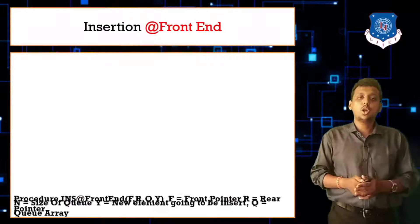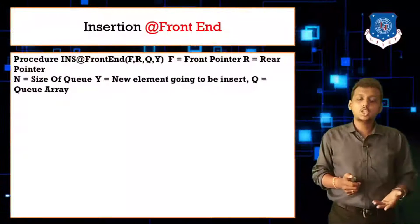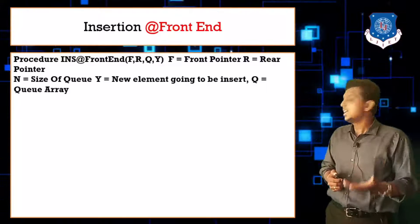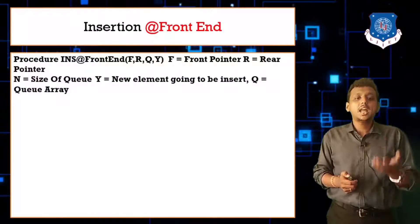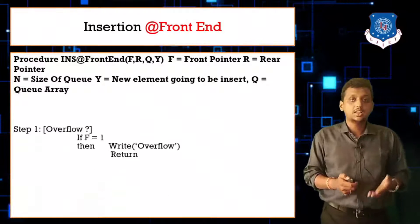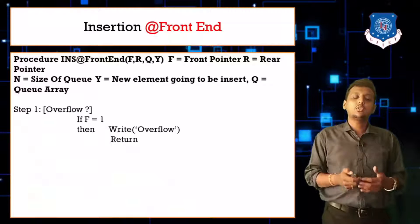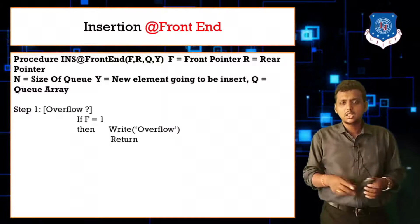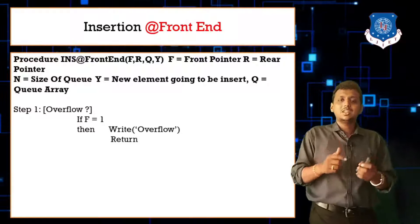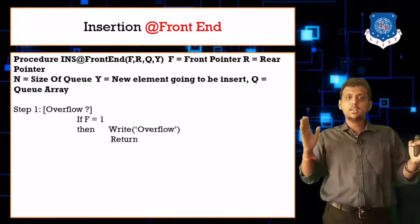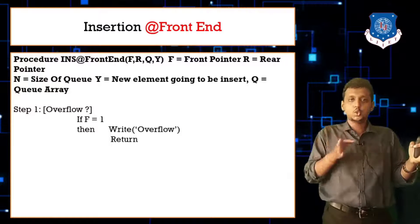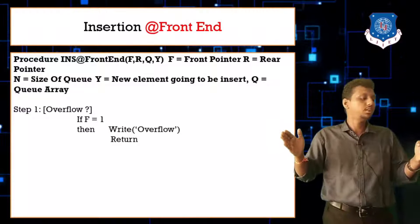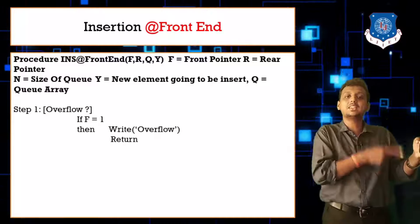The function is: procedure INS_at_front_end(F, R, Q, Y). Check overflow condition. In rear end insertion, overflow occurs when rear reaches N. For front end insertion, overflow occurs when front pointer is at 1, because you cannot decrement front pointer before 1. The queue is from 1 to 5, you cannot go to 0, so when front is at 1 it becomes overflow.